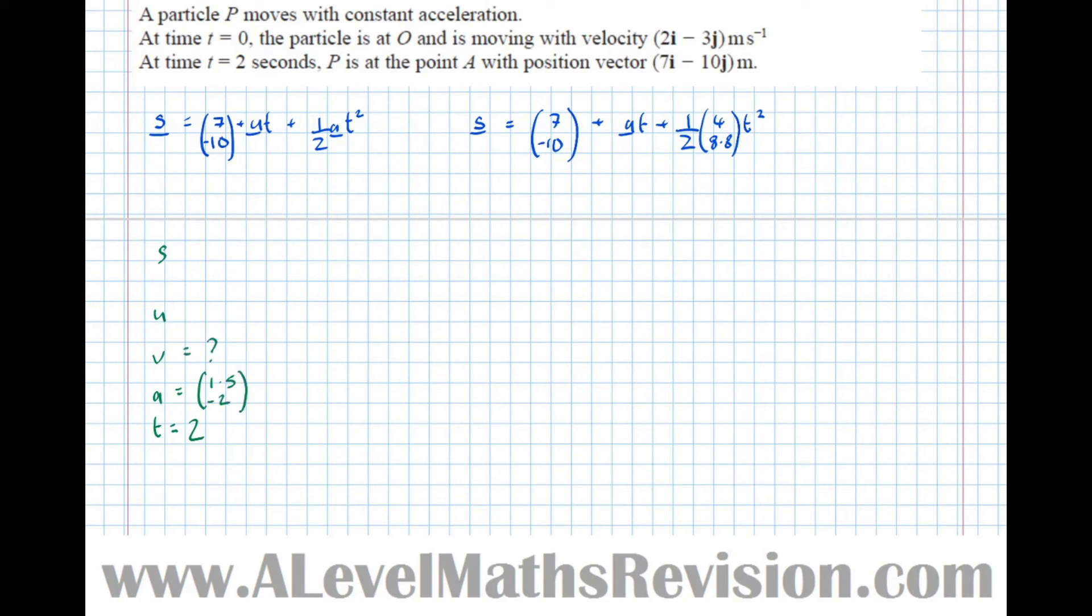The final velocity, that's what we want to find because the final velocity of this phase was the initial velocity of the second phase when it hits A. And the initial velocity here, we're told, was 2 minus 3.